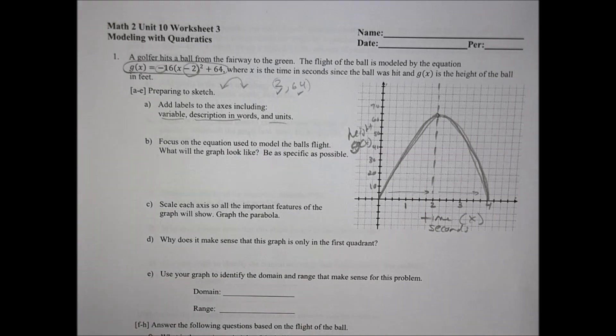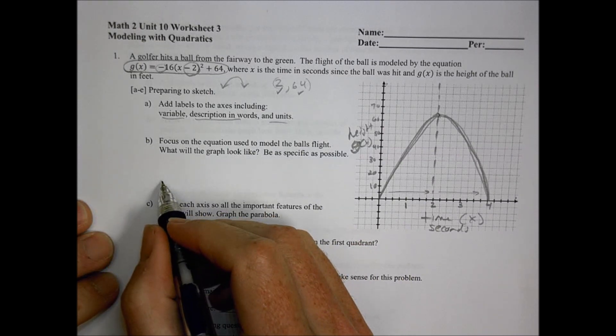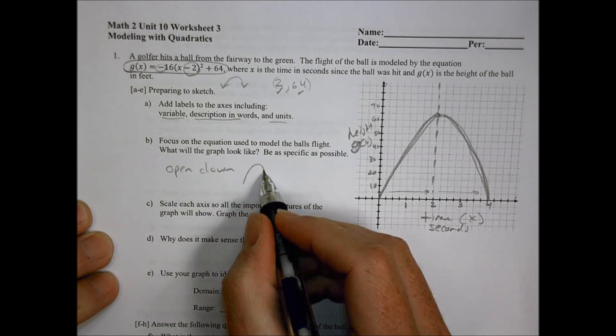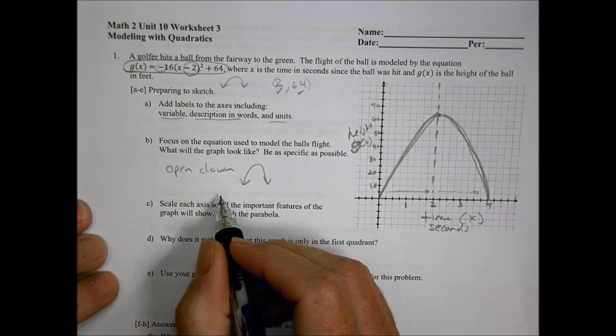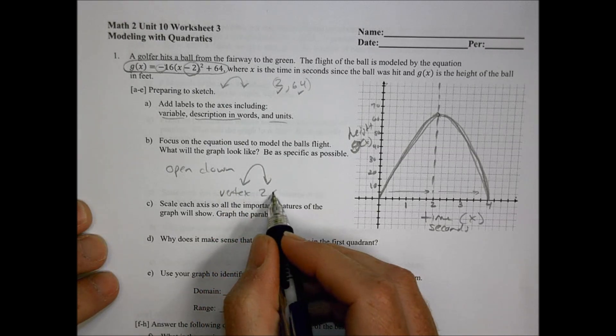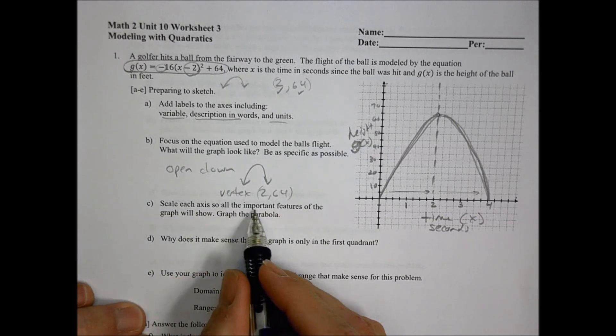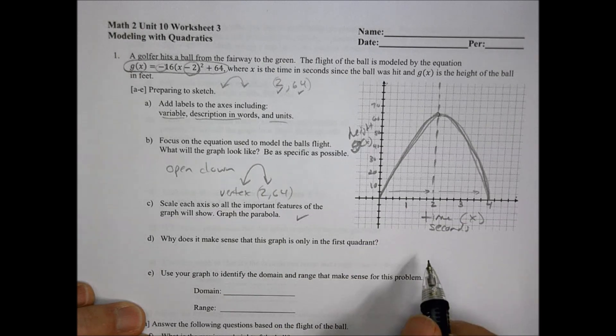Focus on the equation, use the model of the ball's flight. What will the graph look like? Well, we're going to say for this graph it's going to open down, curve this way. It's going to go up at a point and come back down. It's going to start at 0,0 and end at 4. We can talk about the vertex being at 2, 64.